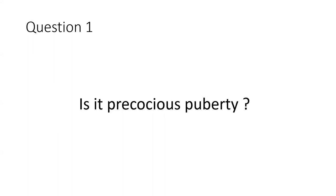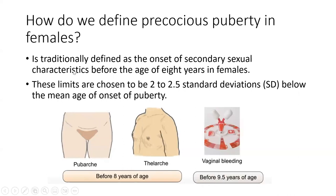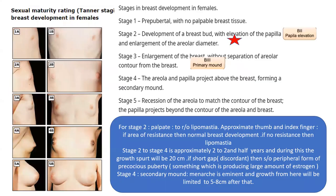The key question is: is this truly Precocious Puberty? Traditionally it is defined as onset of secondary sexual characters before the age of 8 years in females — limits chosen at 2 to 2.5 standard deviations below the mean age of puberty onset. This includes pubarche or thelarche before 8 years of age, or vaginal bleeding before 9.5 years of age, all classified as Precocious Puberty in females.